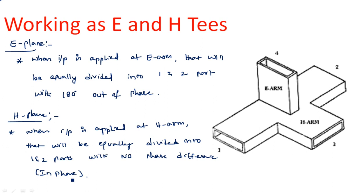In the next video, I will explain the scattering parameters of this Magic T-junction. How many scattering parameters will it have? The size of the scattering matrix is n by n, where n equals the number of ports. Since Magic T has 4 ports, the scattering matrix size is 4 by 4. We will see the calculation of scattering matrix parameters for this Magic T in the next video.